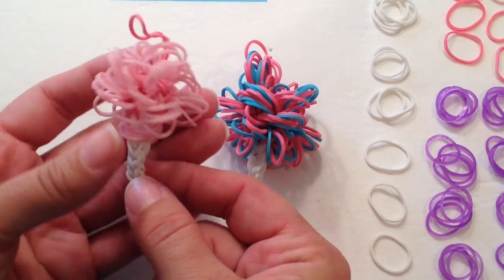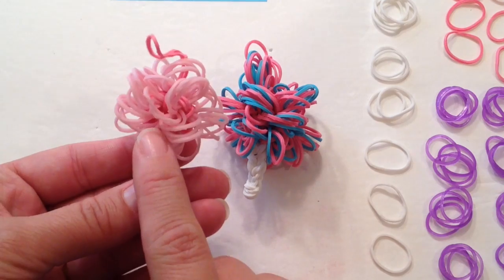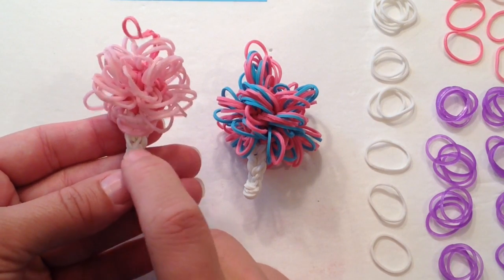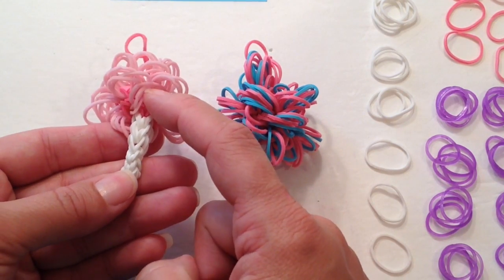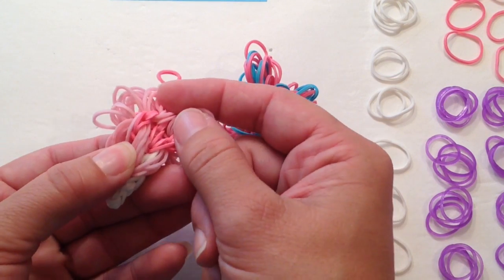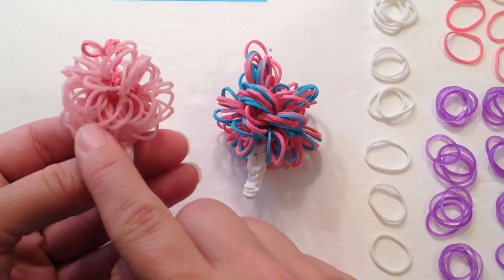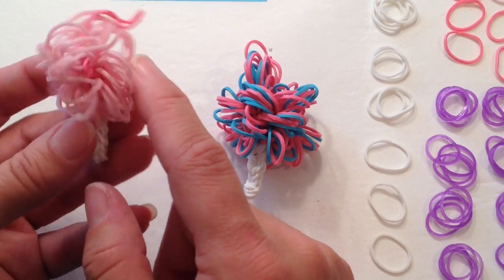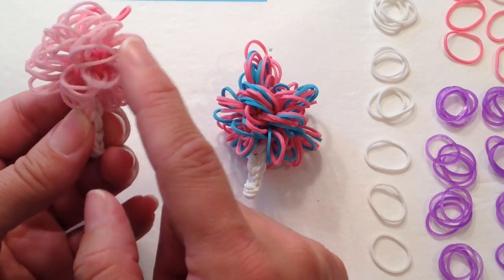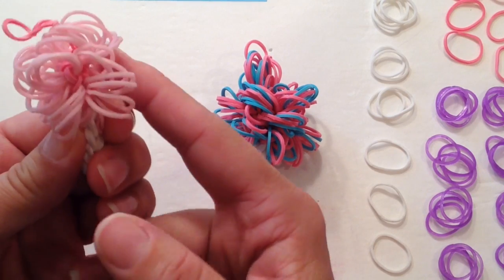For the Cotton Candy Charm here that I'm demoing today, you will need 10 white rubber bands, 9 rubber bands for the inside construction of your cotton candy, and 56 bands in the color of your choice to make the fluffy stuff on the outside.